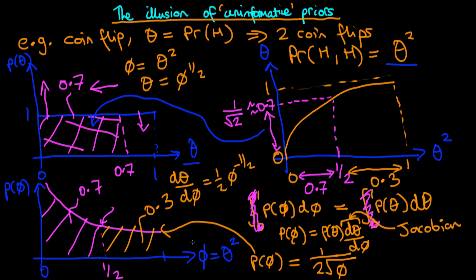In summary, even though we assumed what appeared to be an uninformative prior in terms of theta — the probability of obtaining heads — when we moved to a different frame of reference and asked about the probability of obtaining two heads, our uniform prior for theta made it appear that we are much more confident in not obtaining two heads. That's because the density is higher for low values of theta squared. While I've described this for a simple coin flip example, this holds more generally: there is no way to create a prior which is uninformative in all frames of reference, and because of that there isn't really a prior which you can say is entirely uninformative.